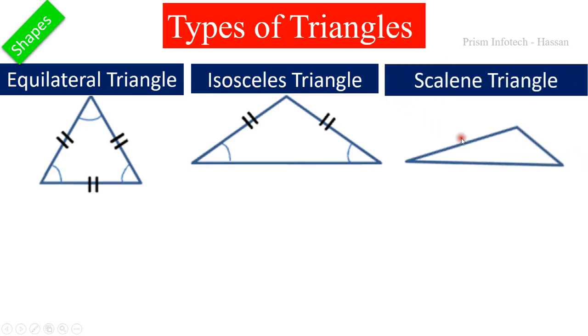Next one is: in this triangle, all three sides are different in length, so this is called a scalene triangle.